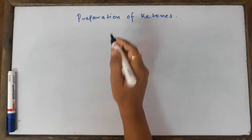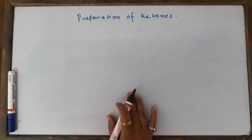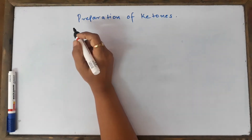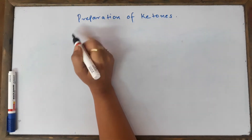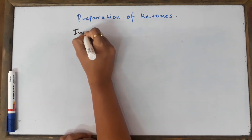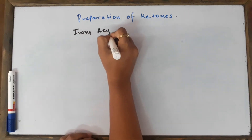Welcome, children. Today we're going to start and continue with the same methods of preparation of ketones we've already discussed — three methods in our previous video — and now I begin with the fourth method, that is from acyl chlorides.